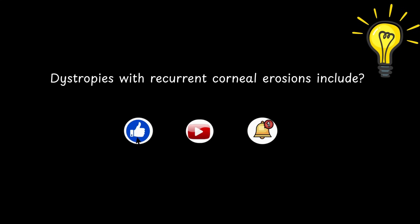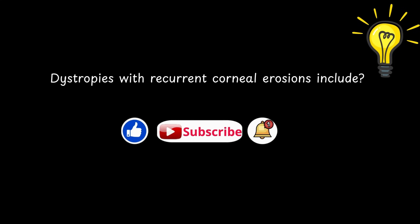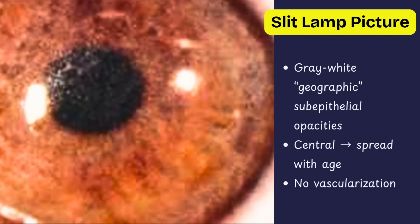Here's a question: which corneal dystrophies present with painful recurrent corneal erosions? Give your answer in the comments. On slit lamp examination, the hallmark finding in RBCD is grey-white geographical or reticular sub-epithelial opacities at the level of the Bowman's layer, usually centered in the visual axis. The overlying epithelium is irregular, and importantly there is no vascularization, unlike the gelatinous corneal dystrophy.